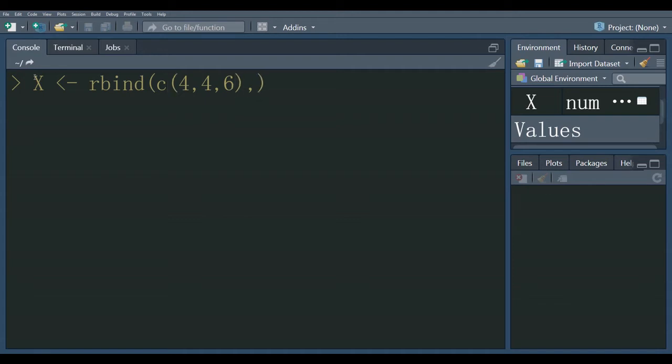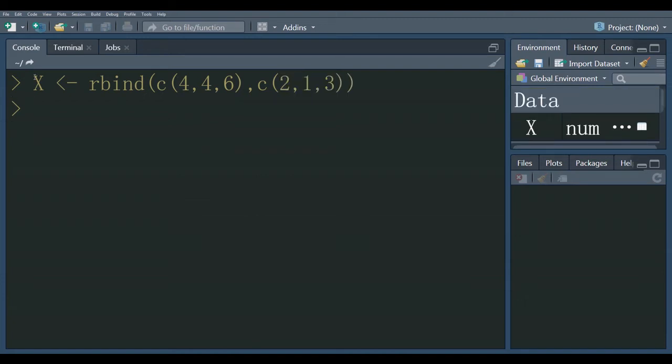Here we create a vector which will be the second row of the matrix: 2, 1, 3. Enter. Here is the matrix.